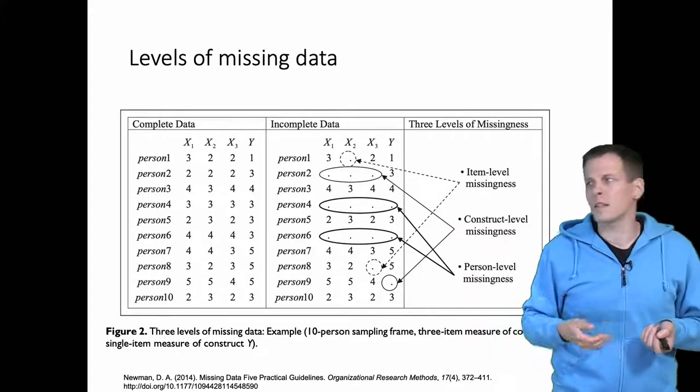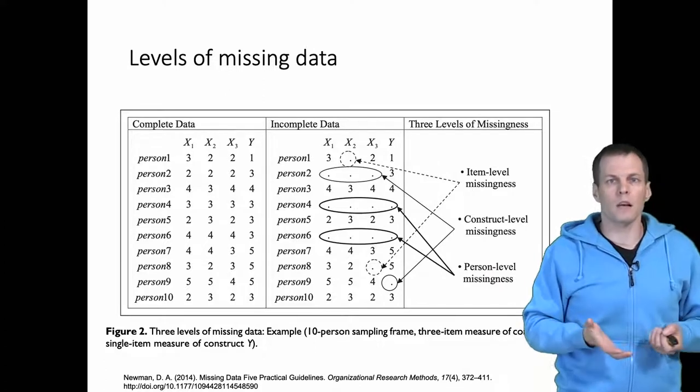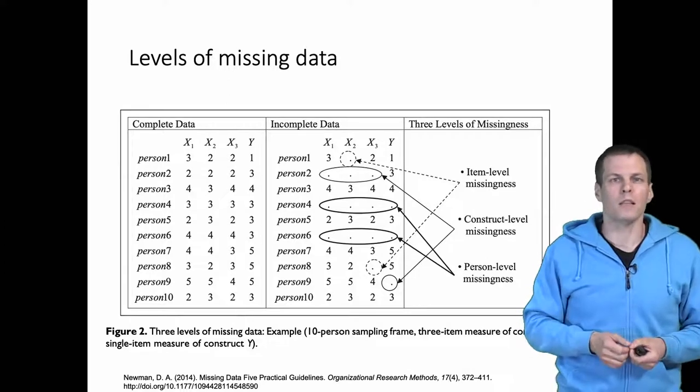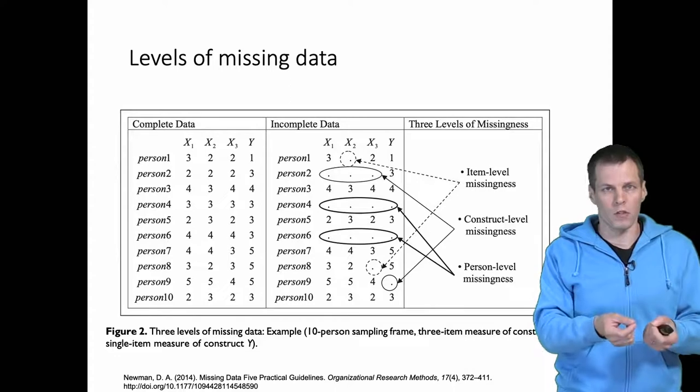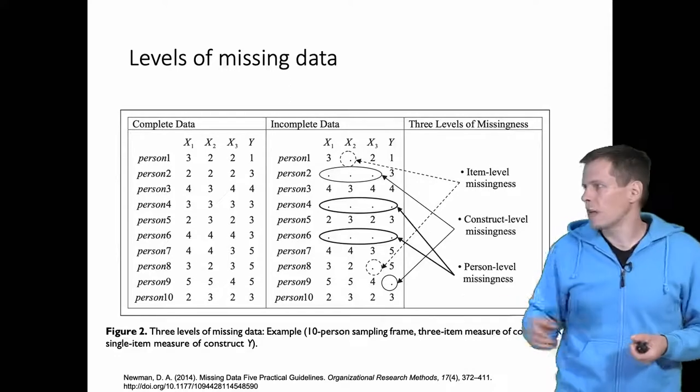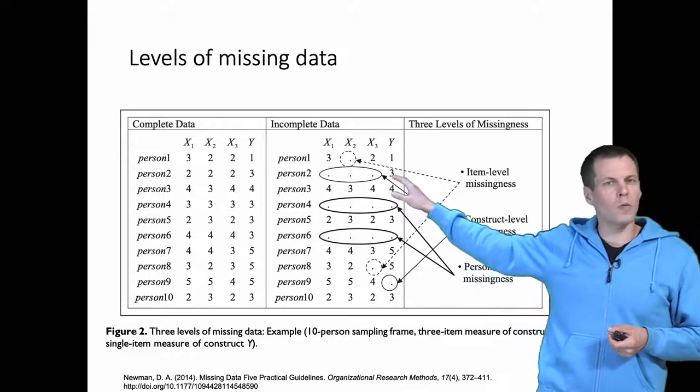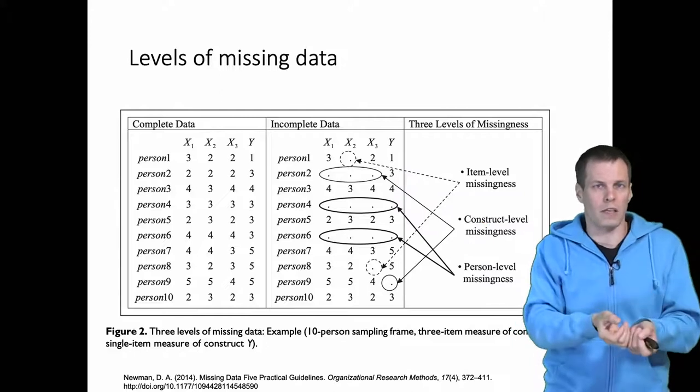Another case is what Newman refers to as construct level missingness, and what the missing data literature more generally refers to as scale level missingness, is that you don't have any data for a measurement scale for a particular concept for a particular person. And this is more problematic because we don't have any information on where this person belongs on construct X.